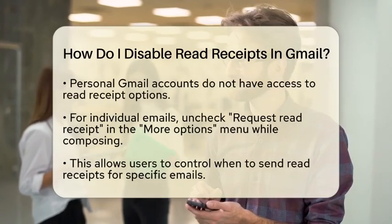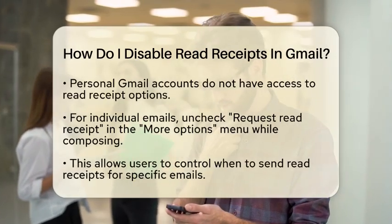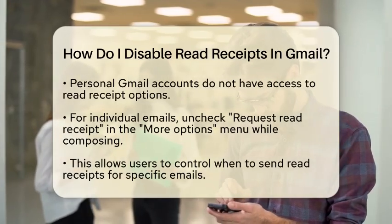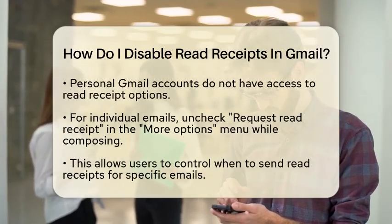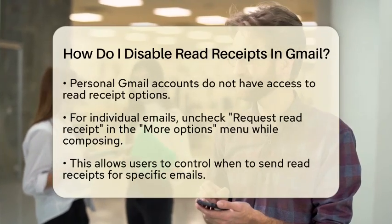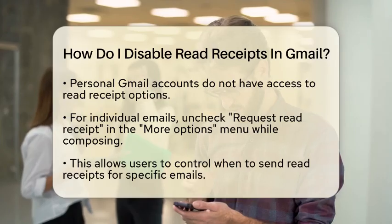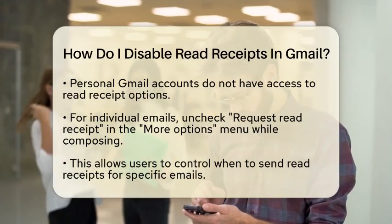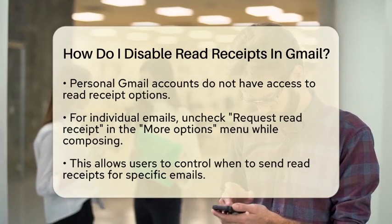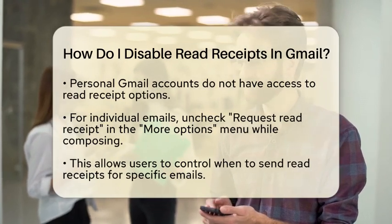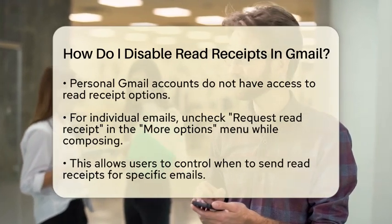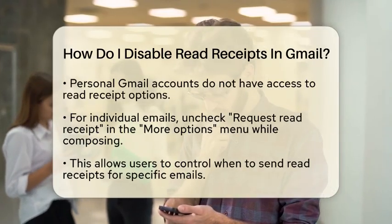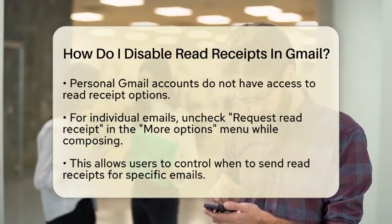If you are a Google Workspace user, disabling read receipts can be done in a couple of ways. For individual emails, when you are composing a new email, look for the Request Read Receipt option in the More Options menu. Simply uncheck this option to disable read receipts for that specific email. This way, you can choose when you want to allow senders to know if you have opened their email.